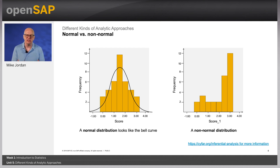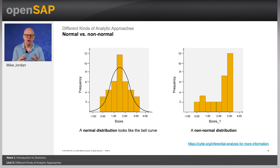For inferential statistics, you need to understand the data distribution — is it normal or non-normal? On the left side, you will see a normal distribution. It looks like a bell curve. The majority of the data is clustered around one number or value in the middle. Usually, when the data are normal, you will choose from statistical tests called parametric tests.